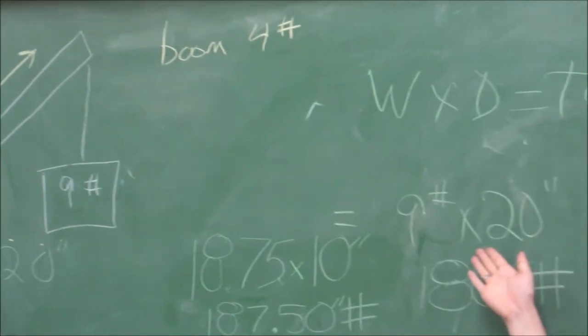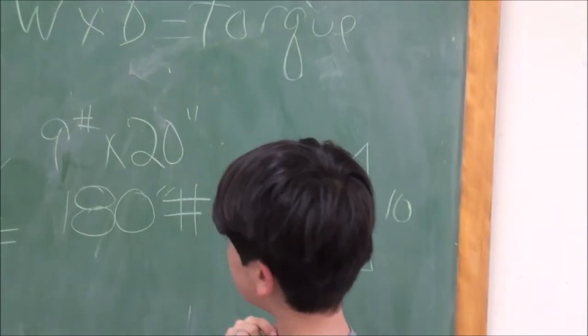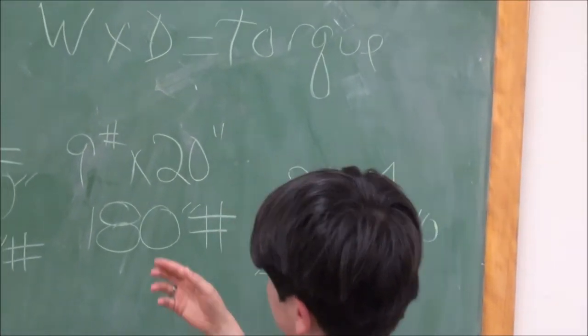Beautiful. We multiply 20 times 9, or 20 inches times 9 pounds, and we get 180 inch pounds.